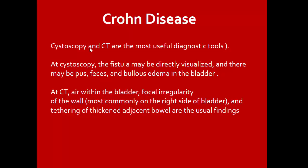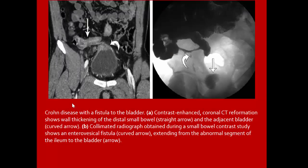Crohn's disease is one cause of cystitis. CT is the most useful diagnostic tool. Cystography may show fistula directly visualized. There may be feces, pus, or polypoid edema in the bladder. CT shows air within the bladder, focal irregularity of the wall, most commonly on the right side of the bladder, and thickening of adjacent bowel. Case of Crohn's with cystitis and fistula to the bladder: contrast-enhanced coronal CT shows wall thickening of distal small bowel adjacent to the bladder. Small bowel contrast study shows enterovesical fistula extending from abnormal ileum segment to the bladder.